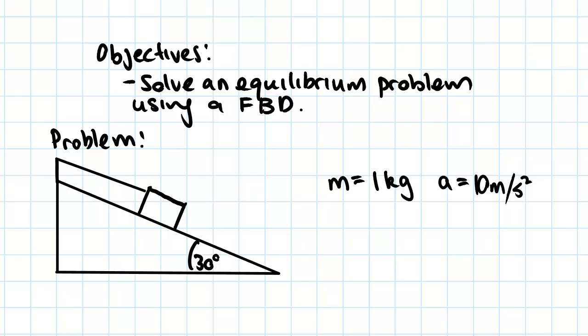So the first thing we're going to do is we're going to work out the external forces on the block. So we've been given the block has a mass of one kilogram and the acceleration due to gravity is 10 meters per second squared.